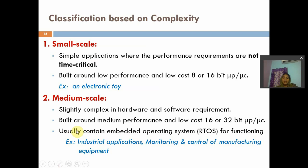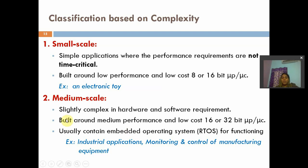Coming to medium scale. These are slightly more complex in hardware and software requirements compared to small scale. Built around minimum performance and low cost using 16-bit or 32-bit microprocessors or microcontrollers. In small scale we use 8 or 16-bit, whereas in medium scale we use 16 or 32-bit. These usually contain embedded operating systems — RTOS, real-time operating systems. Medium scale embedded systems depend upon time. Examples are industrial applications and monitoring and control of manufacturing equipment.